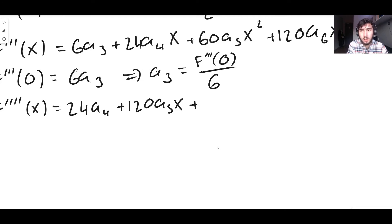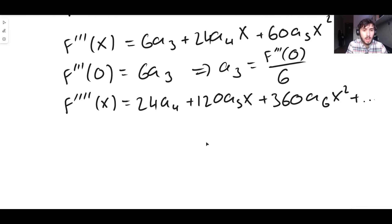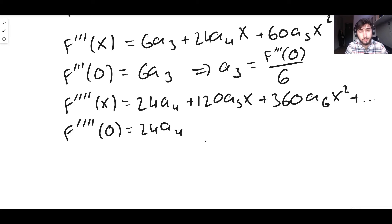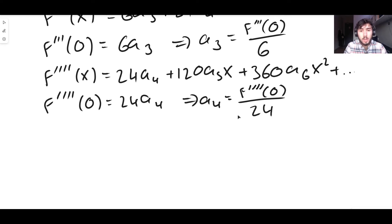For the fourth derivative, differentiating the third derivative: 6a₃ → 0, 24a₄·x → 24a₄, 60a₅·x² → 120a₅·x, 120a₆·x³ → 360a₆·x². Evaluating at zero: f''''(0) = 24a₄, so a₄ = f''''(0) / 24.